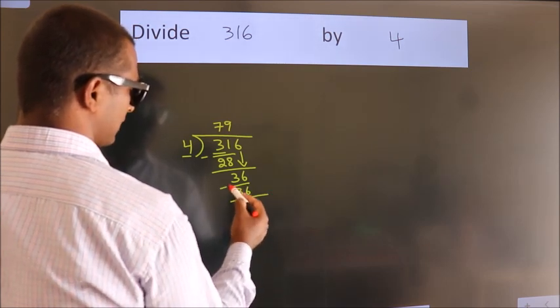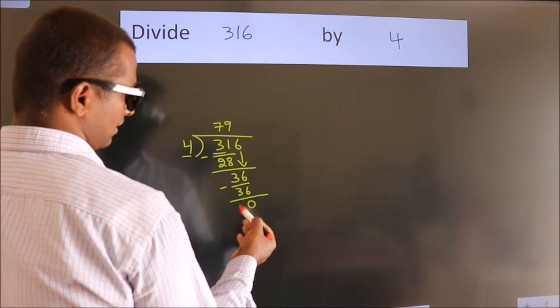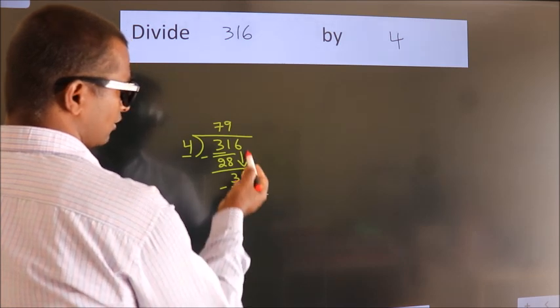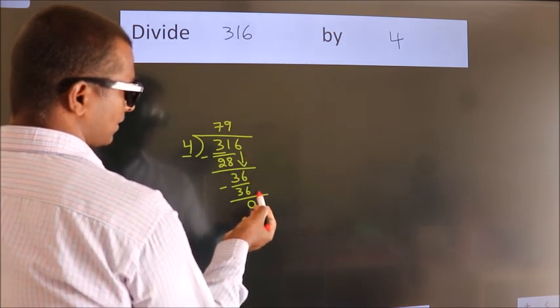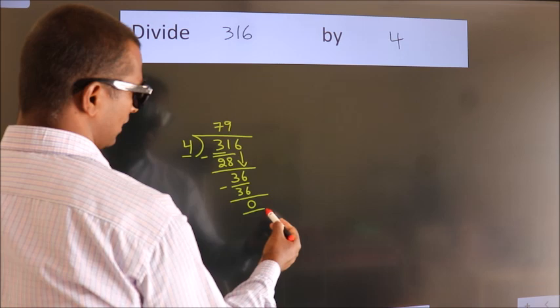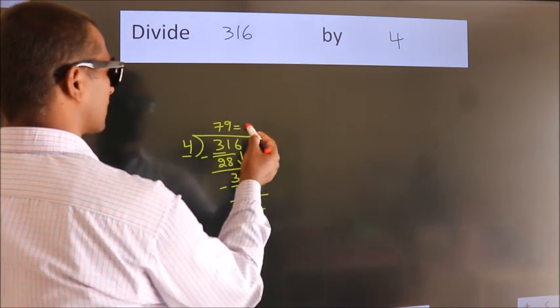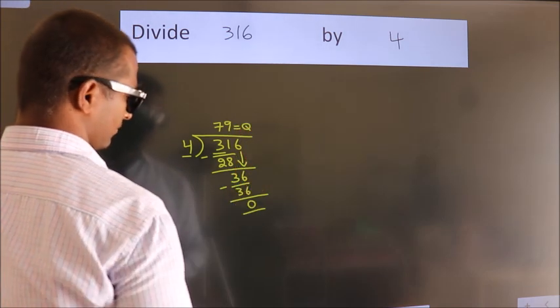Now we subtract. We get 0. After this, there are no more numbers to bring down, and we got remainder 0. So this is our quotient: 79.